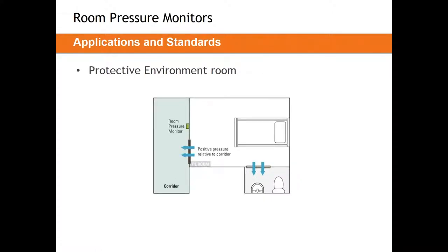Protective environments are essentially the exact opposite. The people in these spaces have a compromised immune system — their body cannot handle other diseases or anything that might be present in a hospital. So we need to isolate them from the rest of the hospital by blasting air out of the space. Protective environments are positively pressurized. The room pressure sensor should typically be right above the door, with the monitor located just to either side, clearly visible to those coming and going.